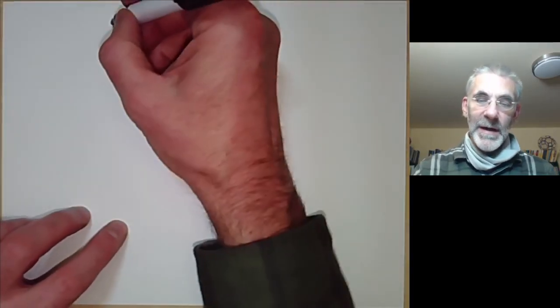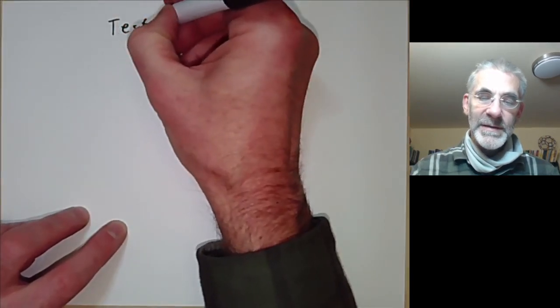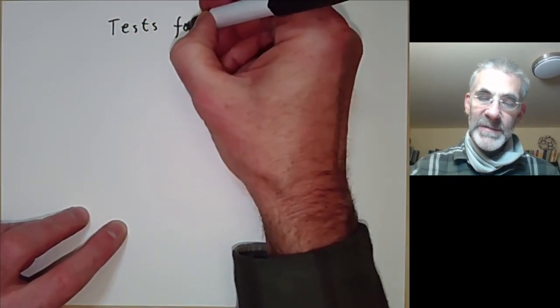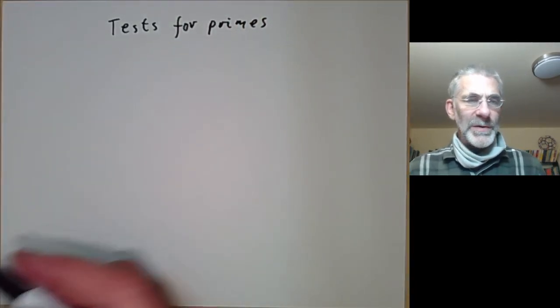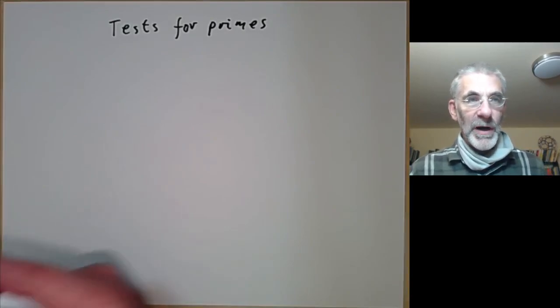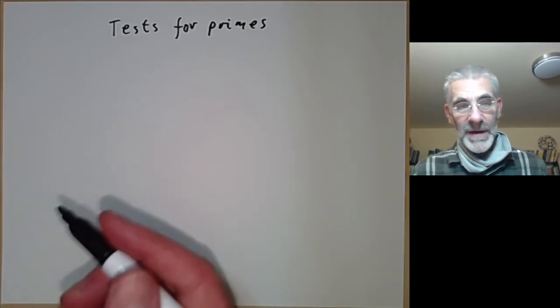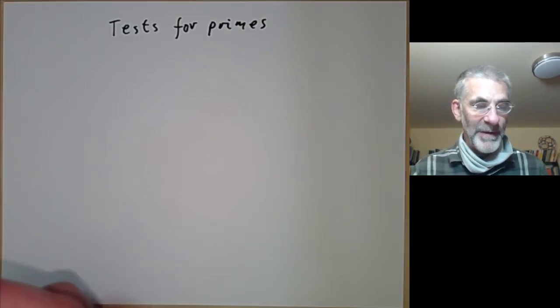This lecture is part of an online course on the theory of numbers and will be about some tests for primes. In other words, suppose we've got a number n, we want to try and tell whether it's prime or not. These tests won't actually always work, but they will give some information.